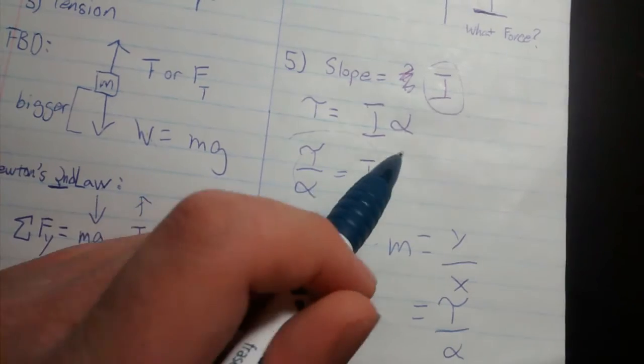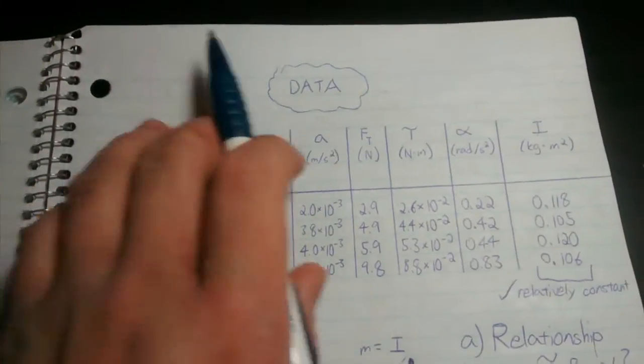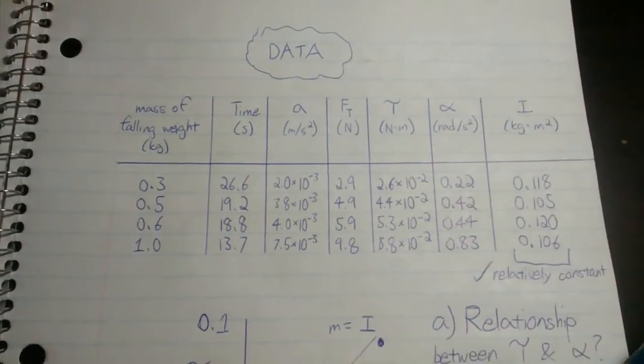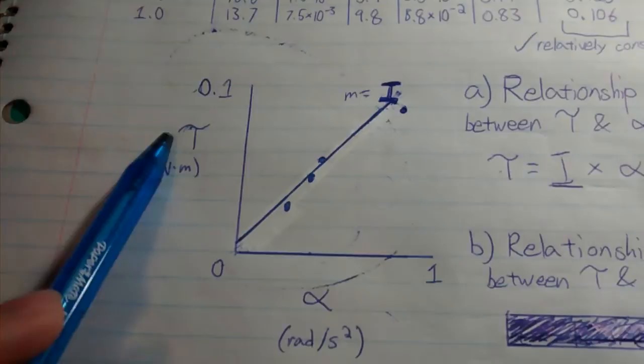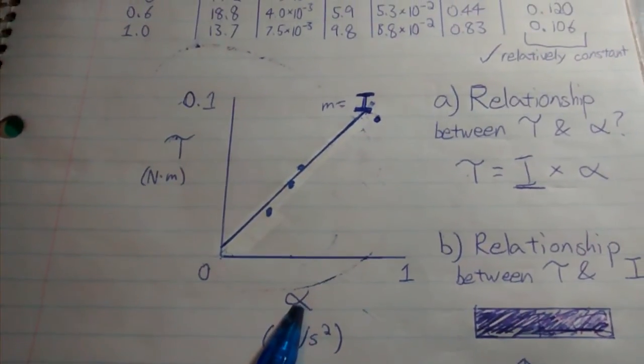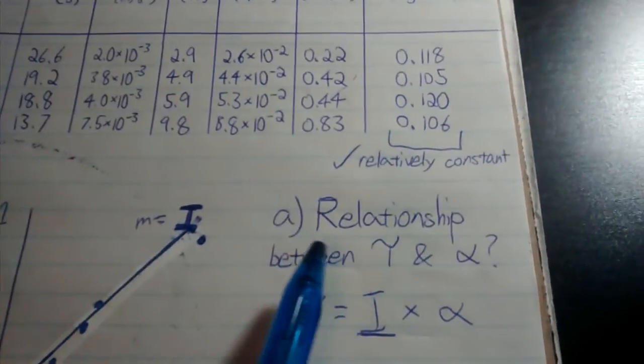After finding the data, here are our results. We have a graph with torque on the y-axis and angular acceleration on the x-axis. This is our graphed data. To answer today's question: what is the relationship between torque and angular acceleration?